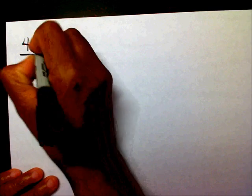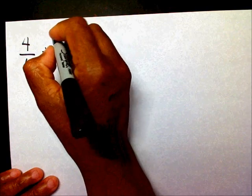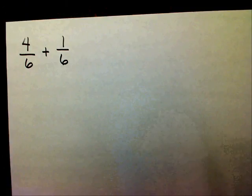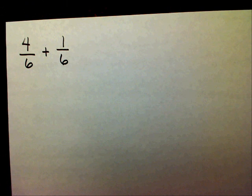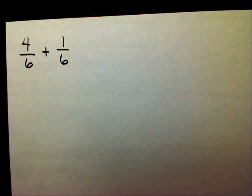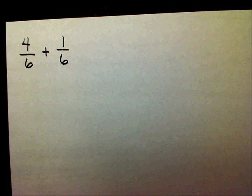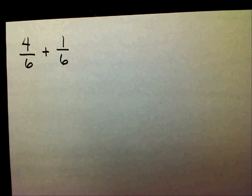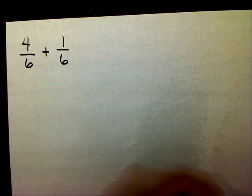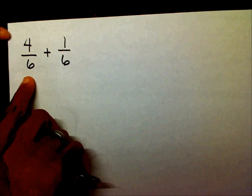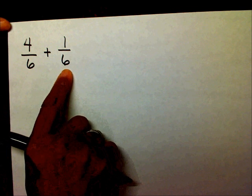Let's say we had 4/6 plus 1/6. Now, whenever you add or subtract fractions, you have to have the same denominator. That's the hardest part, getting the same denominator. But with the fractions that we're doing today, the denominators are already the same. The denominator is 6 here and the denominator is 6 here.